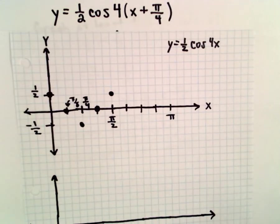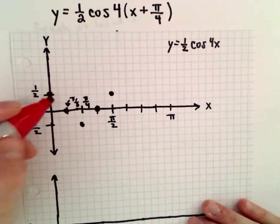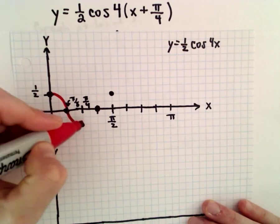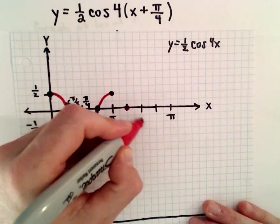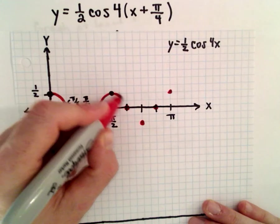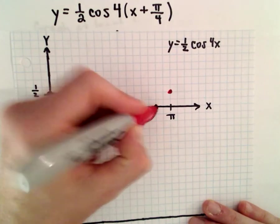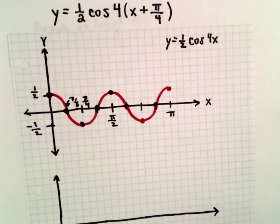So there's one period. There's one period. And then it just continues that pattern. So now just repeat that same graph, and you're in business.